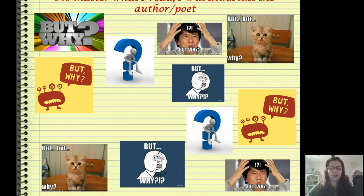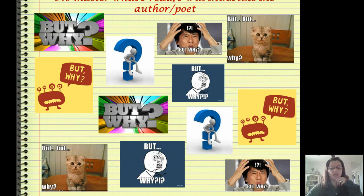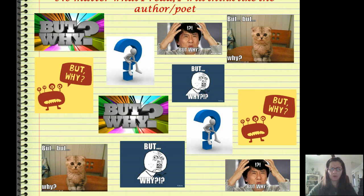You have to be able to think like the author or poet, and the only way to truly do that is, after reading something, ask: but why? Why would the author choose that? Why would the author make that decision? Why did the author name that character Bob? Why did the author describe the setting like that? Why did he choose to organize the plot in that order? Ask yourself why. Think like the author or the poet, and you're going to do fine.